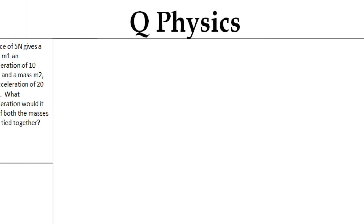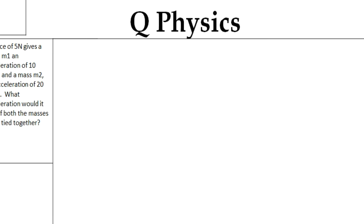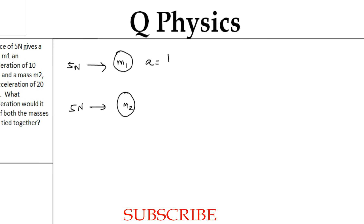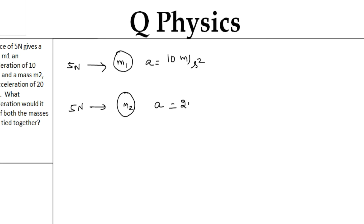A force of 5 newtons gives a mass m1 an acceleration of 10 meters per second squared, and a mass m2 an acceleration of 20 meters per second squared. A force of 5 newtons acts on mass m1, and the same force acts on mass m2, giving m1 an acceleration of 10 m/s² and m2 an acceleration of 20 m/s².